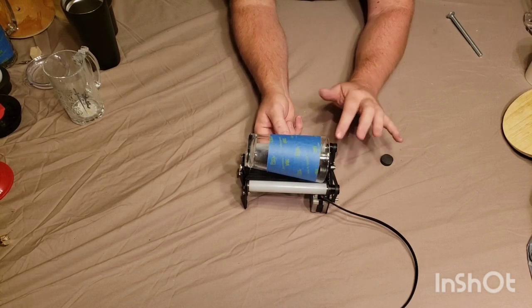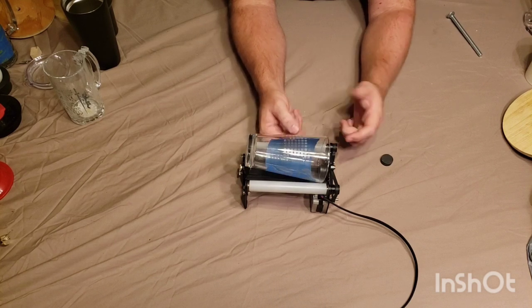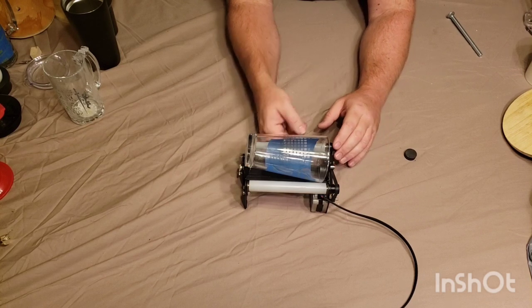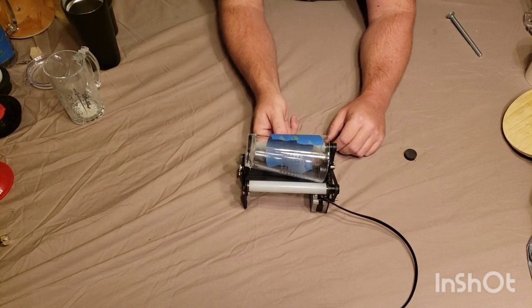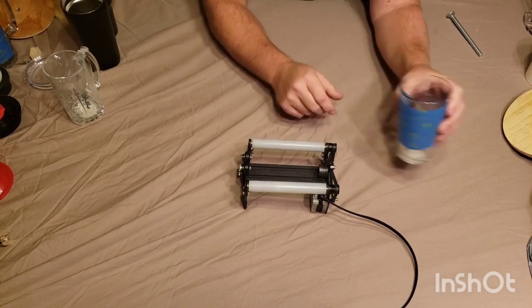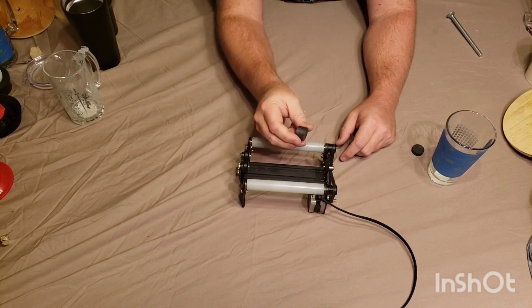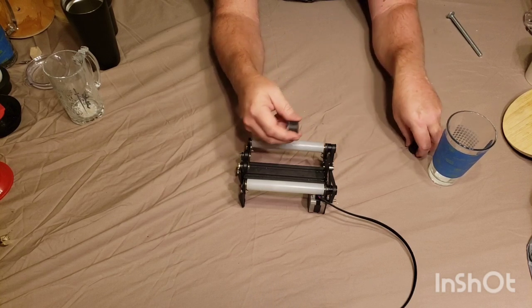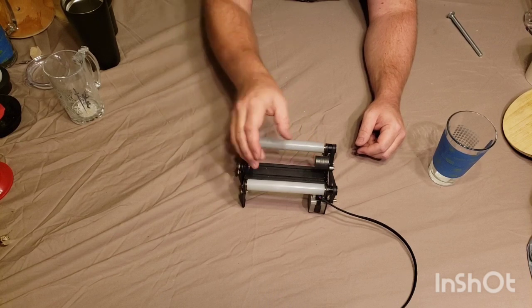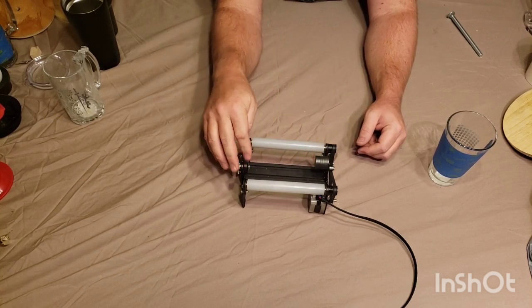And as long as you get it set up fairly square, which is kind of the tough part with these ones, now it's going to be sitting level across here. It's on the rollers and should roll fairly smooth. It's kind of spanning a wide deal with this setup right here. It does a little better when the rollers are narrowed up.